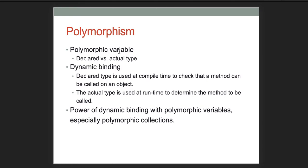Polymorphism: make sure you understand the difference between a variable's declared type versus its actual type — that's what makes it polymorphic. We can take an object of a child class and assign it to a variable of the parent type. Dynamic binding means the declared type is used at compile time to check that a method can be called on an object, while the actual type is used at runtime to determine which method is called. Understand this especially in polymorphic collections, where the collection is of the parent type and elements could be of any child type.